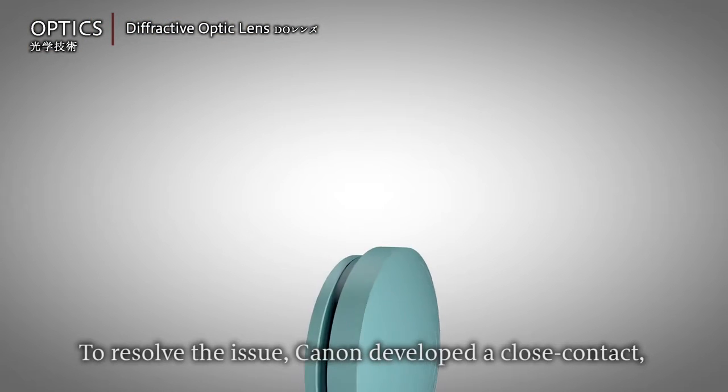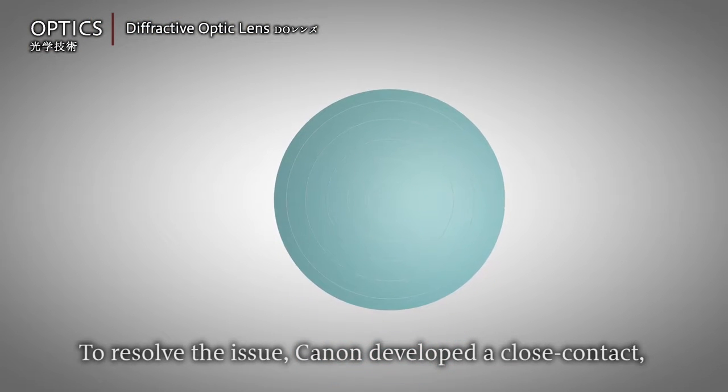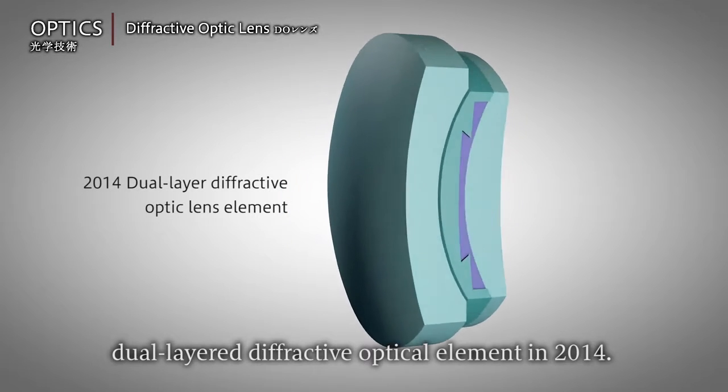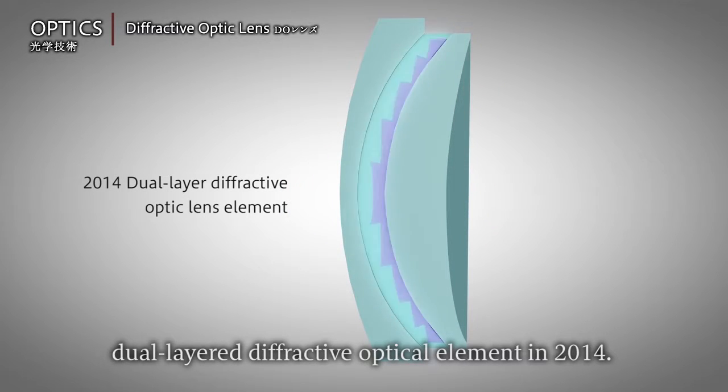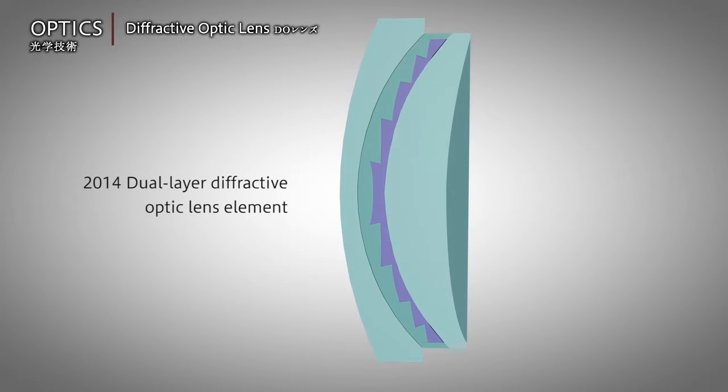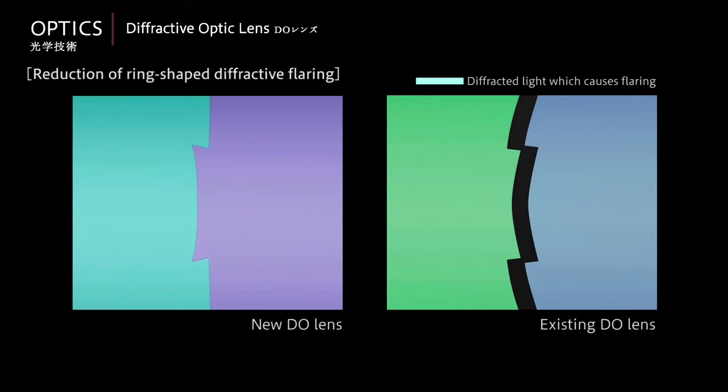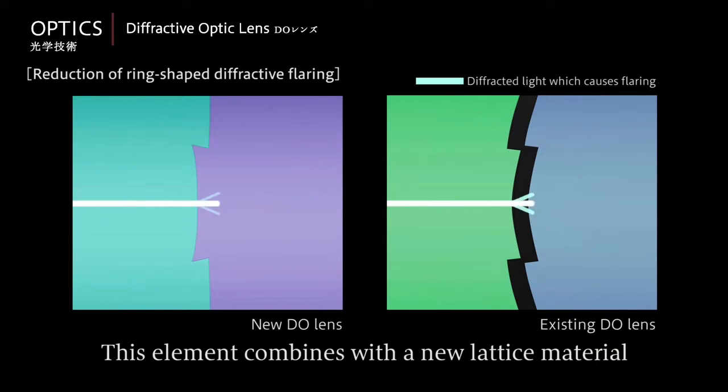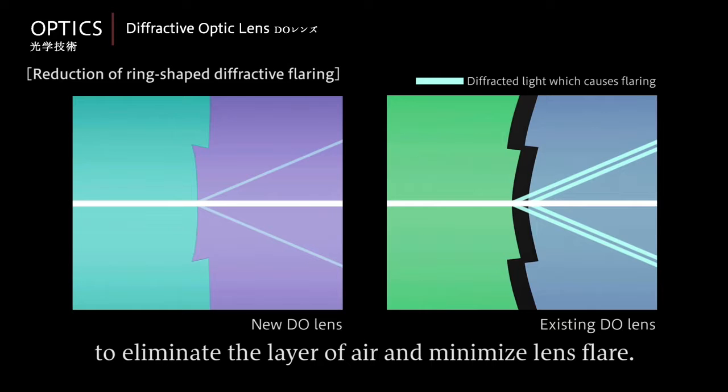To resolve the issue, Canon developed a close-contact dual-layered diffractive optical element in 2014. This element combines with a new lattice material to eliminate the layer of air and minimize lens flare.